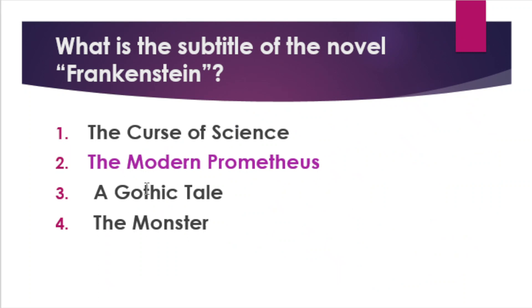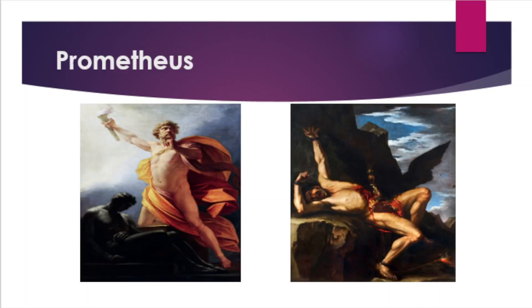The correct answer is The Modern Prometheus. This is the subtitle of Frankenstein. In Greek mythology, Prometheus stole fire from the gods and gave it to humanity. He was subsequently bound and punished eternally for his crimes. Similarly, Frankenstein discovered how to give life to things and is subsequently punished by the endless tragedy delivered unto him by his creation. But unlike fire, his gift to humanity — the knowledge of the secret of life — remains a secret.